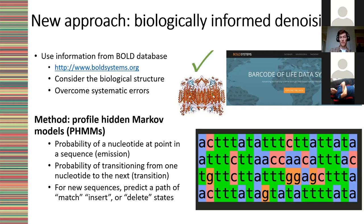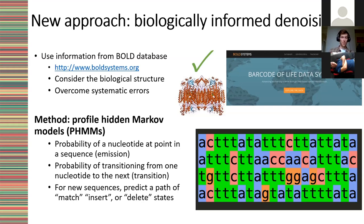The method used is the profile hidden Markov model. A profile hidden Markov model is a probabilistic representation of a multiple sequence alignment: given a large number of aligned DNA sequences, the model learns the probability of any nucleotide being present at a given position and the probability of transitioning from one nucleotide to the next. For example, the probability of an A at position one might be 75%, giving an emission probability of 75% for A at position one. Two of three A's followed by a C gives a 66% transition probability for A-to-C. These probabilities are learned for every position and used to predict whether any given nucleotide in a new sequence is a match, an insert, or a deletion.